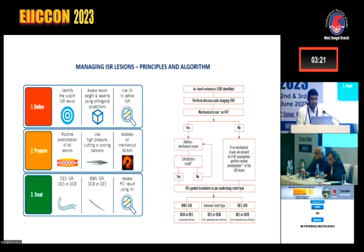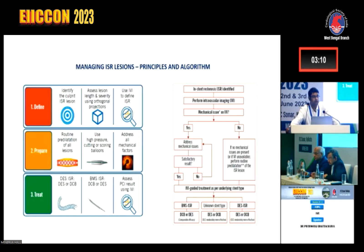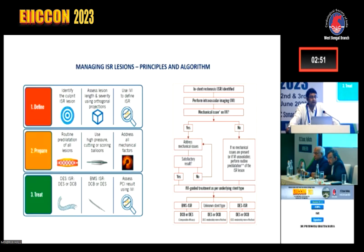The principle for treating ISR lesions: first define and identify the culprit, assess lesion length and severity using orthogonal projection, use intravascular imaging liberally, repair the lesion properly, routinely predilate all lesions, use high-pressure cutting or scoring balloon, address all mechanical factors, and ultimately treat — in DES-ISR, you can use another DES or DCB; in BMS-ISR, DCB is the preferred choice. Finally, assess your result with intravascular imaging.